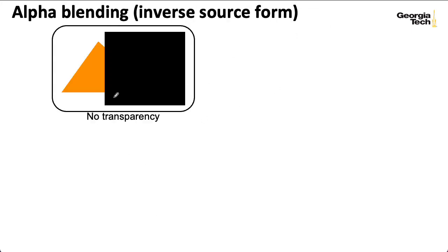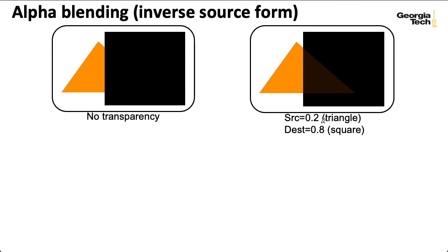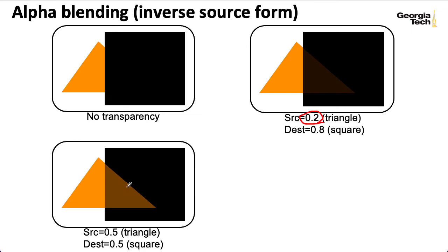Many years ago, my colleague Sean Lee created this demonstration based on just the power of PowerPoint — no fancy 3D API. Imagine you were to draw the black square over the orange triangle without any alpha blending; you'll get something like this. But if you draw it with an alpha of 0.2, then in the place where the triangle and the square overlap, you will see a little bit of the triangle blended with the square. As you increase that alpha value, you see more and more of the orange of the triangle.